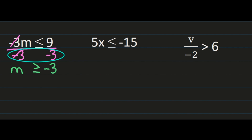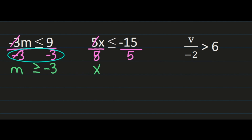In the second example we have 5x less than or equal to negative 15. My step is going to be to isolate my variable x by dividing both sides by 5. On the left hand side, my 5s will simplify out, leaving me with just x. On the right hand side, a negative divided by a positive is a negative, and 15 divided by 5 is 3, so I'll have negative 3.